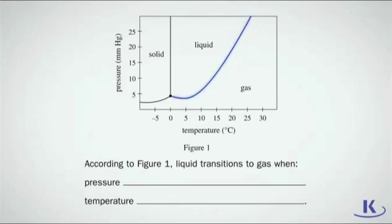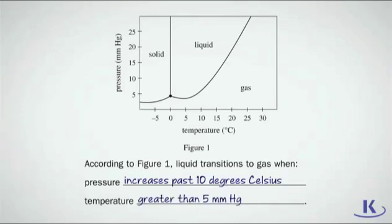Notice the boundary line between liquid and gas is on an incline. That means that the relationship is more involved than that for the transition from solid to liquid. It will depend on both temperature and pressure. Look at both. Note that the transition occurs as the temperature increases past 10 degrees Celsius and at pressures greater than 5 millimeters of mercury.